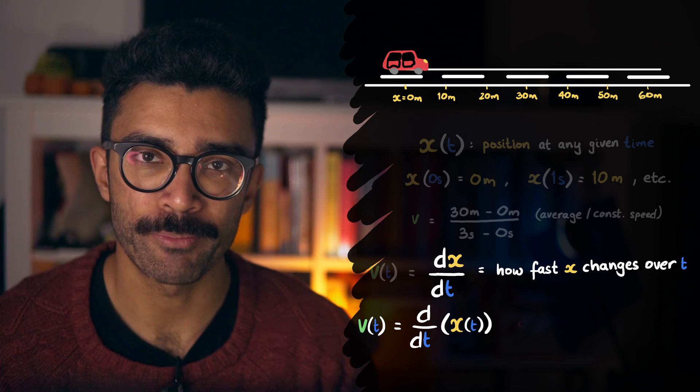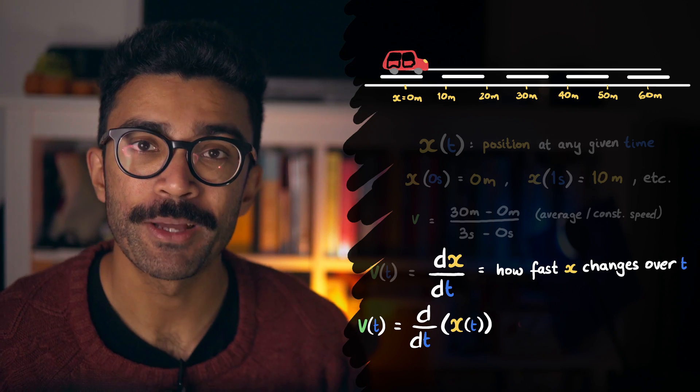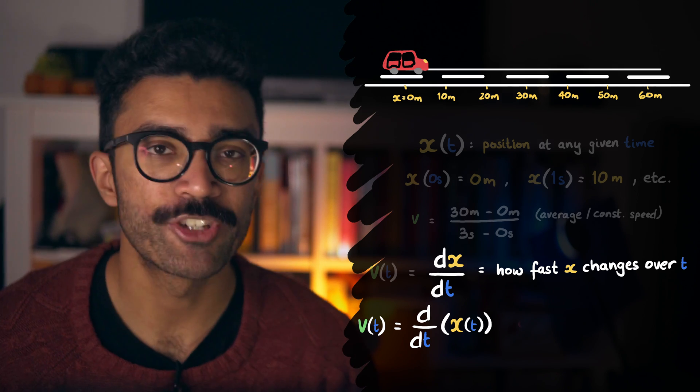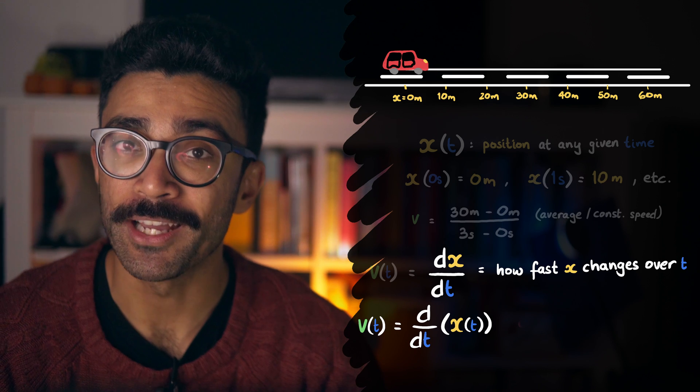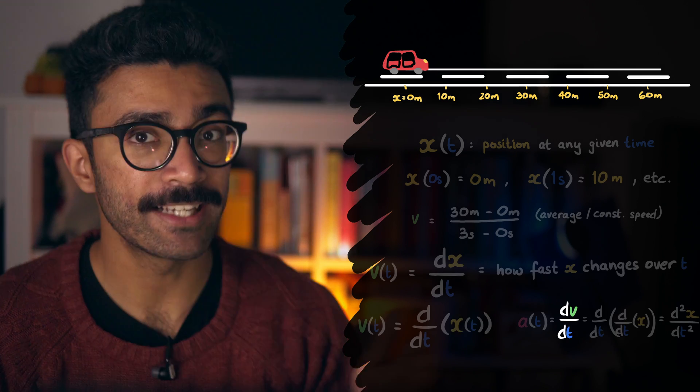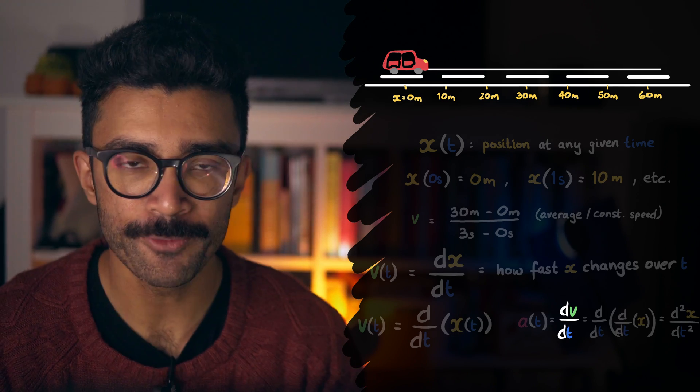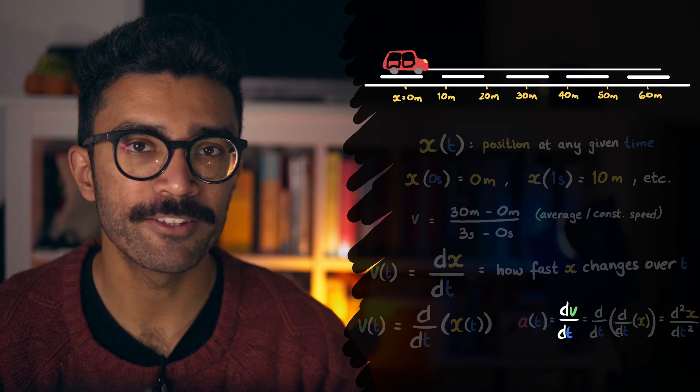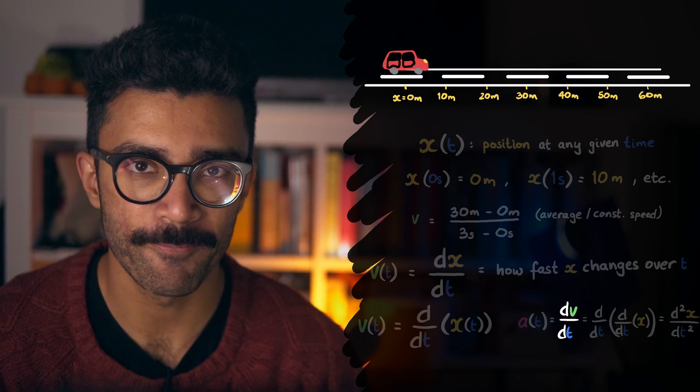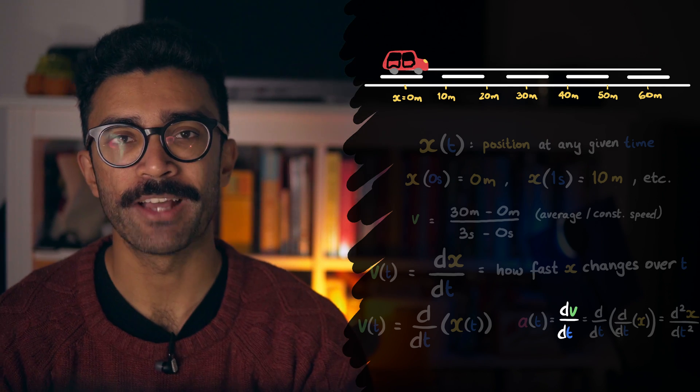So as we said earlier, we're measuring how x changes with a change in t. And by the way, we can differentiate this quantity again with respect to t if we want to, to find out, this time, how quickly the velocity changes over time. This is known as the car's acceleration.